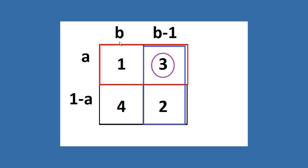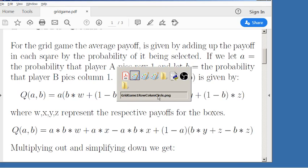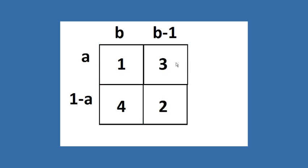And so if we think about in terms of probabilities, B is the probability of selecting column 1, and 1 minus B is the probability of selecting column 2. And similarly, A is the probability of player A selecting row 1, and 1 minus A is the probability of selecting row 2. And so if we think about the average payout for this grid, it's going to be the probability of hitting the 1, which would be B times A times 1, plus the probability of hitting the 3, which would be A times 1 minus B times 3.